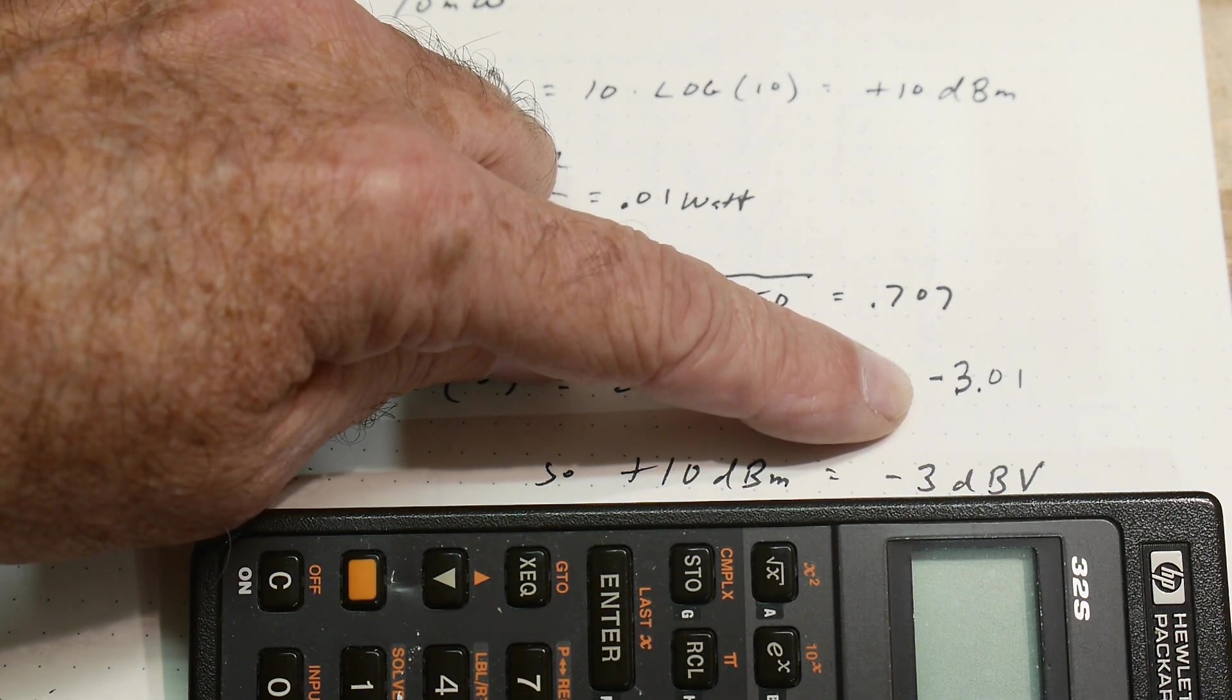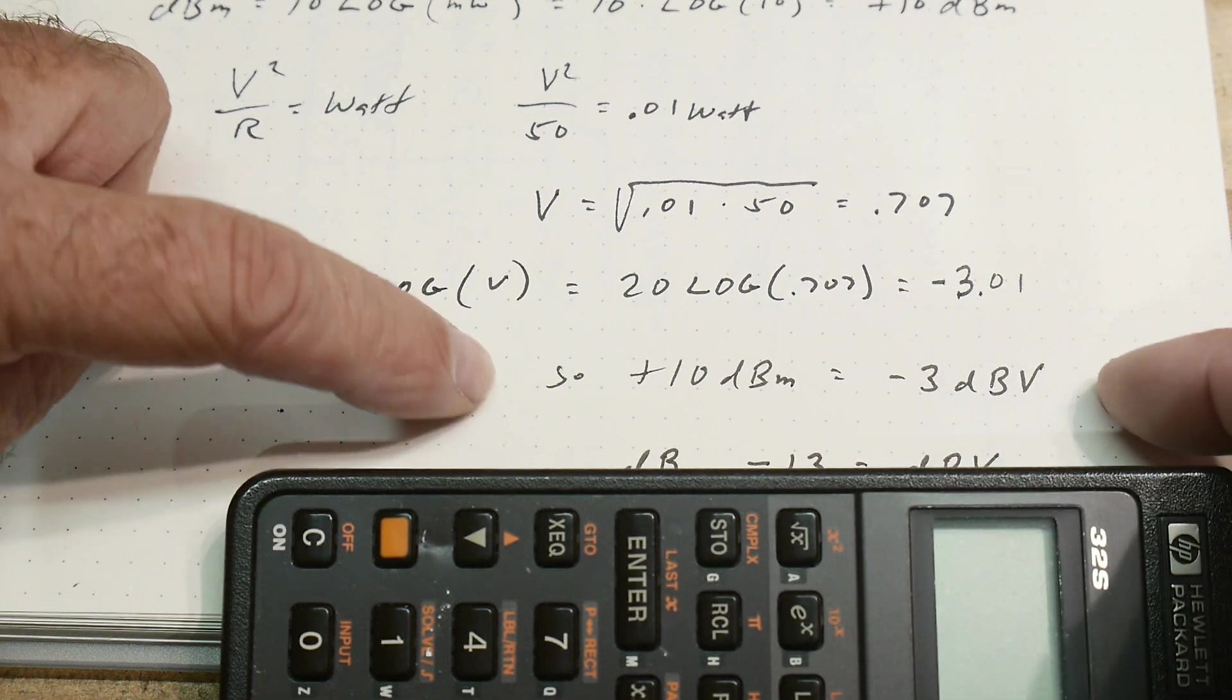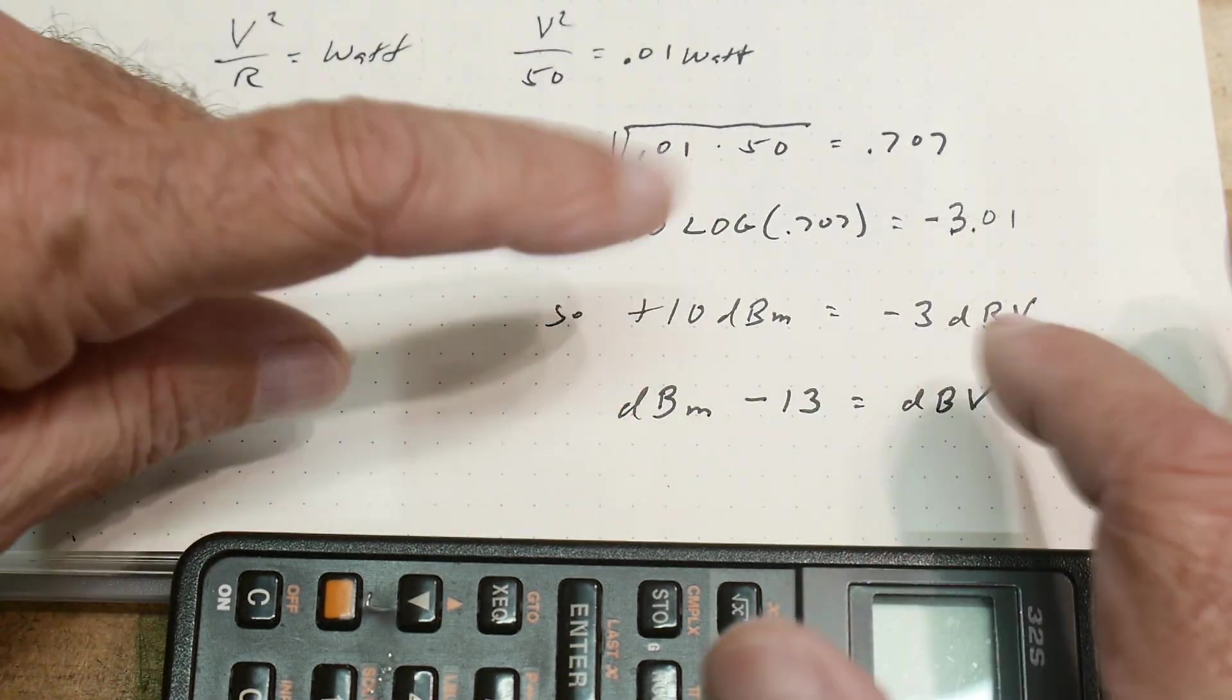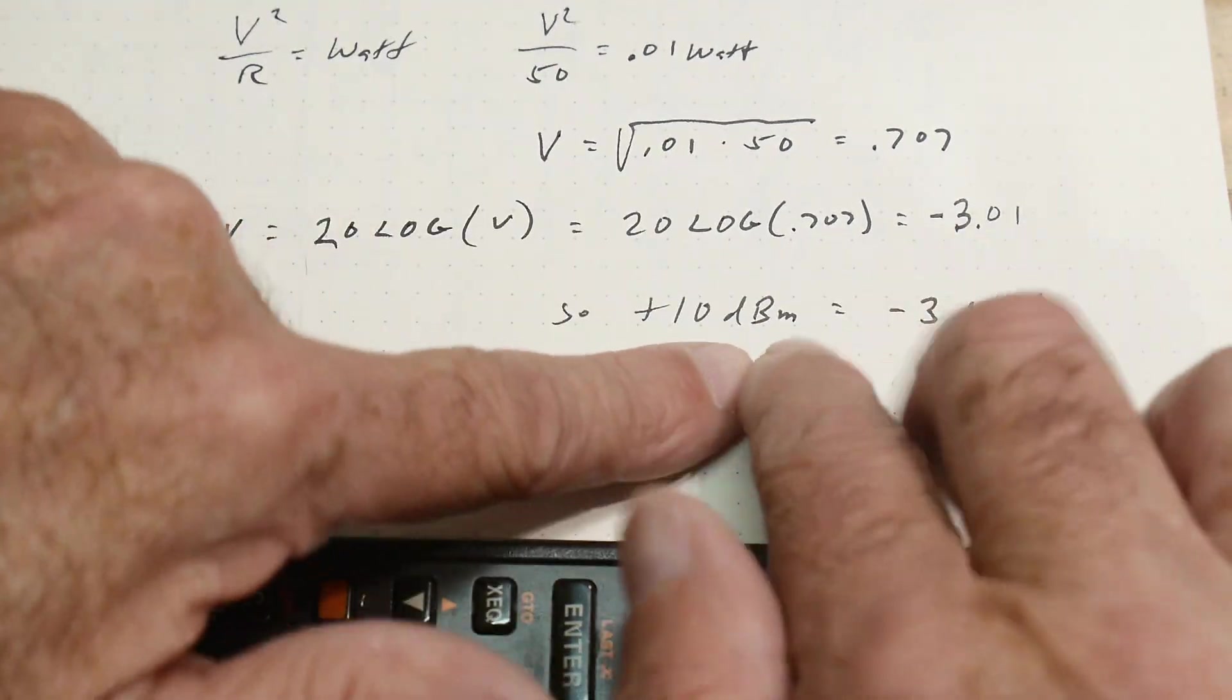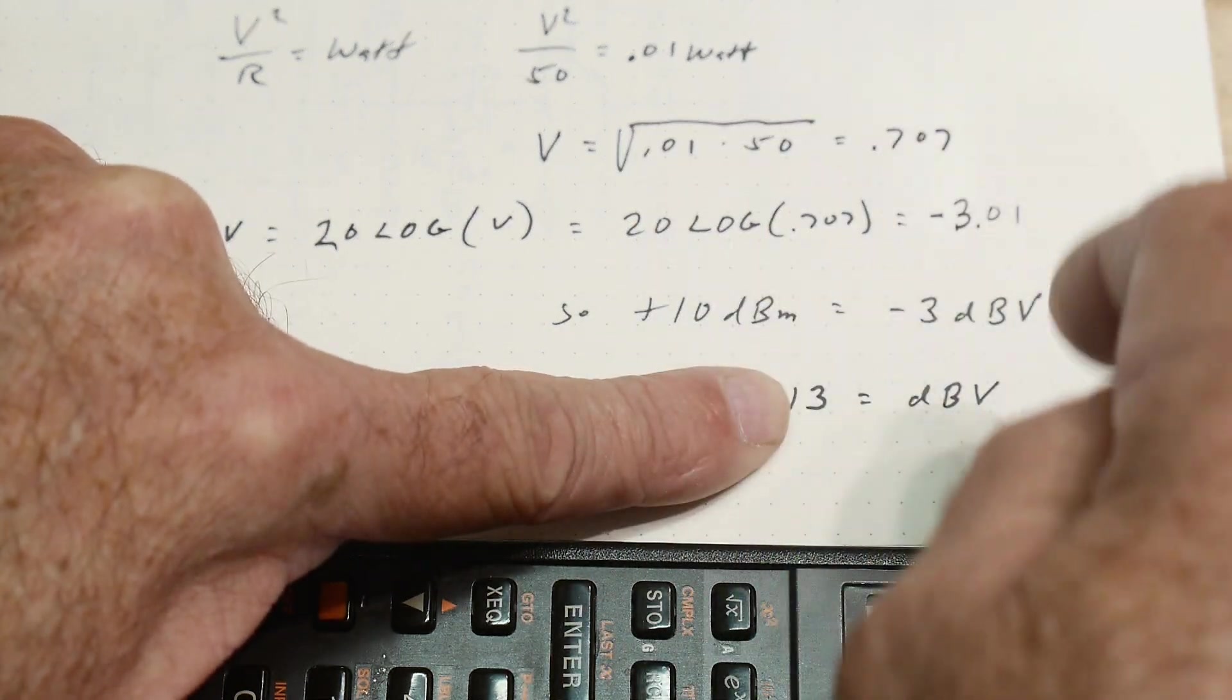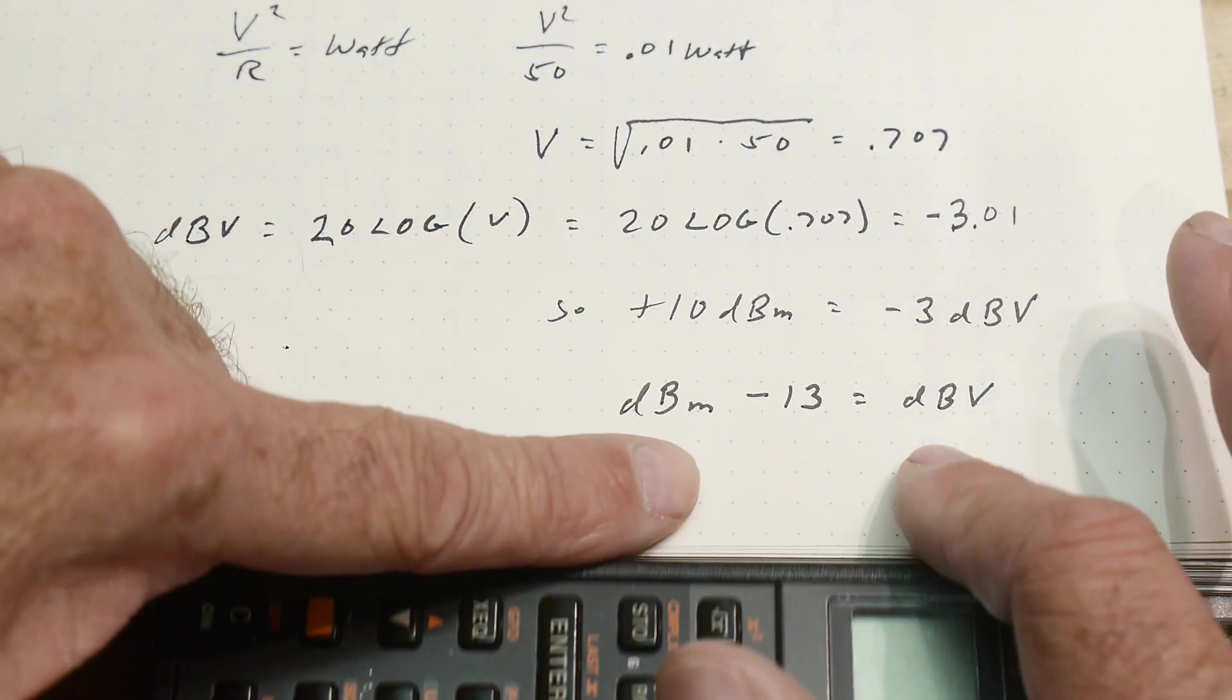So we had plus 10 dBm is equal to minus 3 dB volts. And because there are logarithms they always track, so we can use this equation. 10 dBm equals minus 3 dB volts. That means that if you ever have the reason to convert dBm's to dB volts you just subtract 13. It's always 13 because the difference here is 13. You have plus 10 here and you have minus 3 here. You can either bring the minus 3 over here and you get plus 13, or you can bring the 10 over here and you get minus 10. You get dBm minus 13 is dB volts.